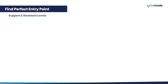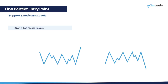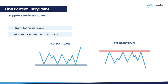Price behavior against strong technical levels is the basis for this type of entry. As soon as traders find the lines of support and resistance on the chart, traders should watch price behavior around these levels. The buy entry point is formed when the price bounces upward from the support level, whereas the sell entry point is formed when the price bounces downward from the resistance level.